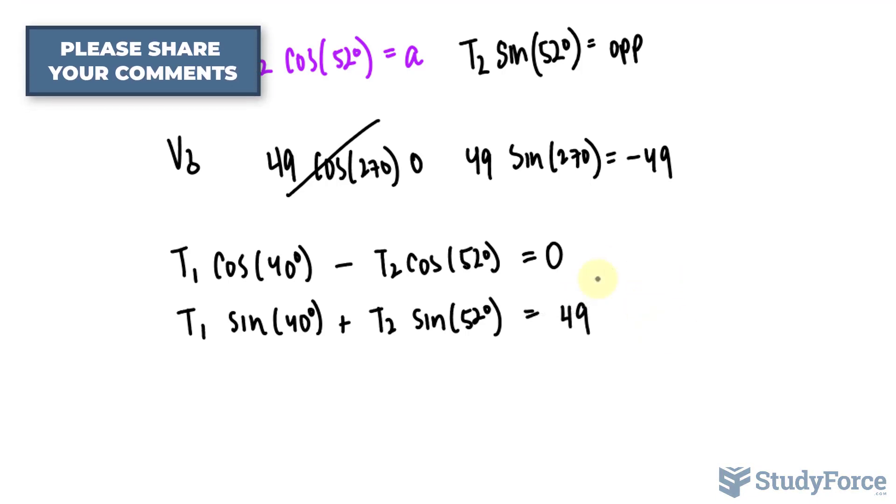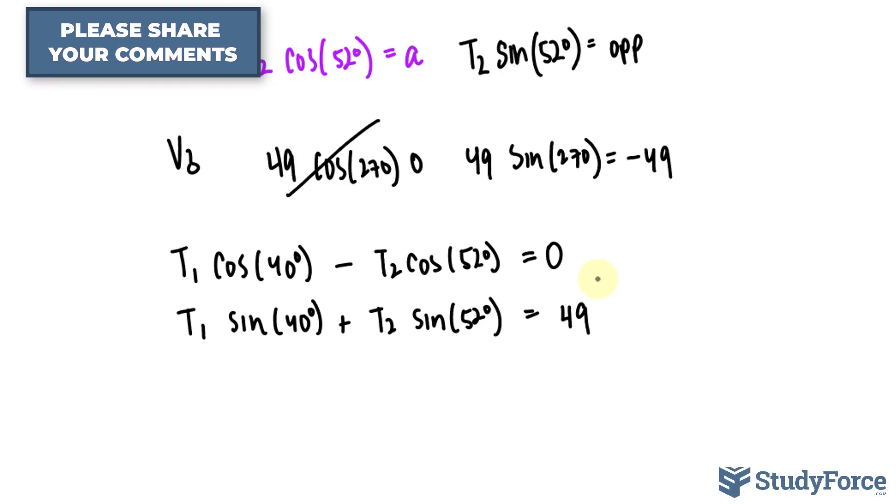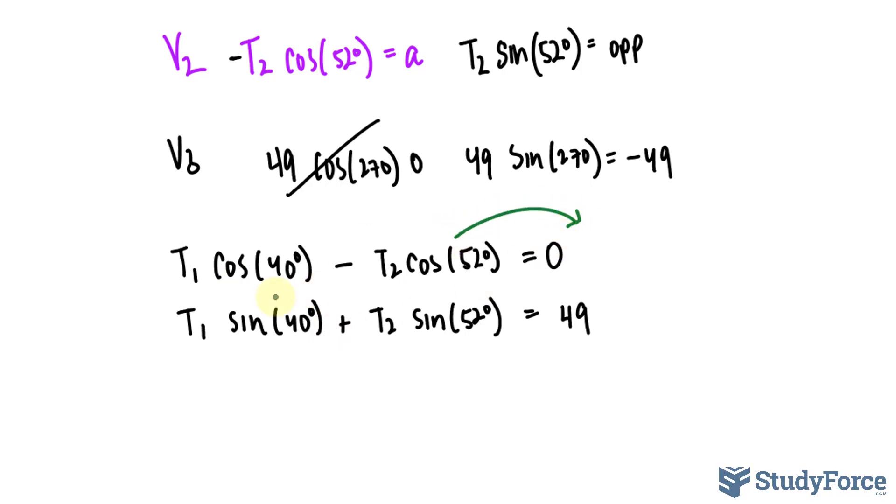As you can tell, what you have here is a system of equations. That's right, a linear system of equations that you can solve by elimination or substitution method. In case you haven't seen that in a while, technically what you can do is solve for T sub 1 in one of these equations and substitute it into the other equation. So I'll take this term over to the right side and divide both sides by cosine 40 and I have T sub 1 isolated.